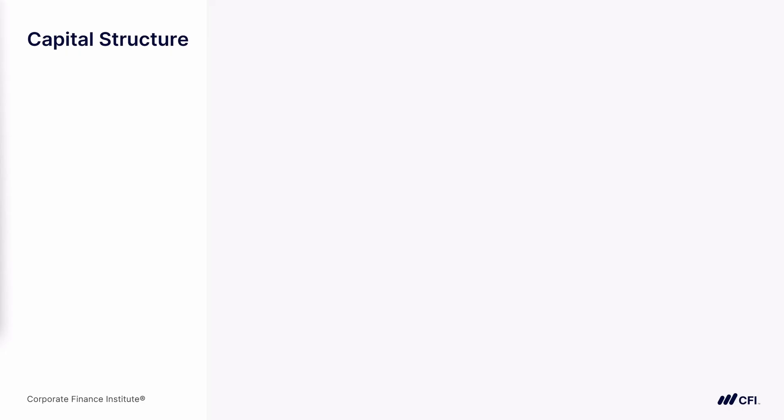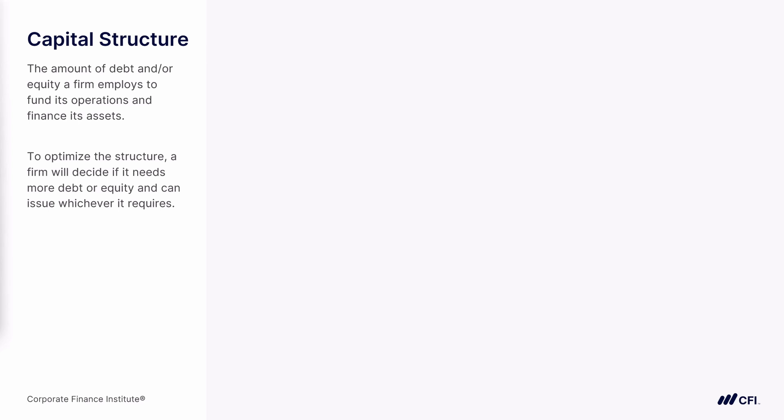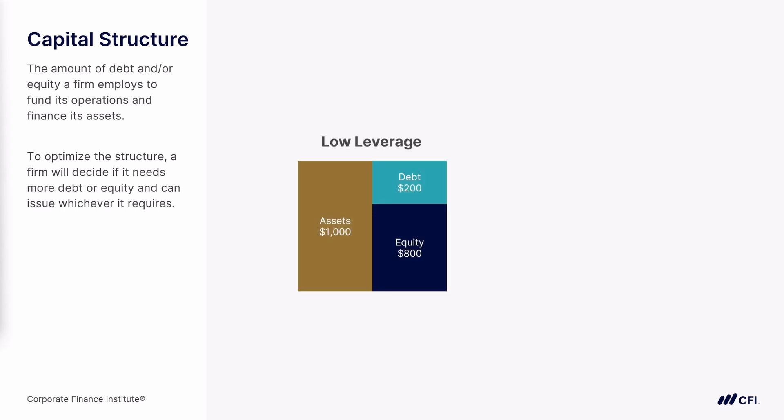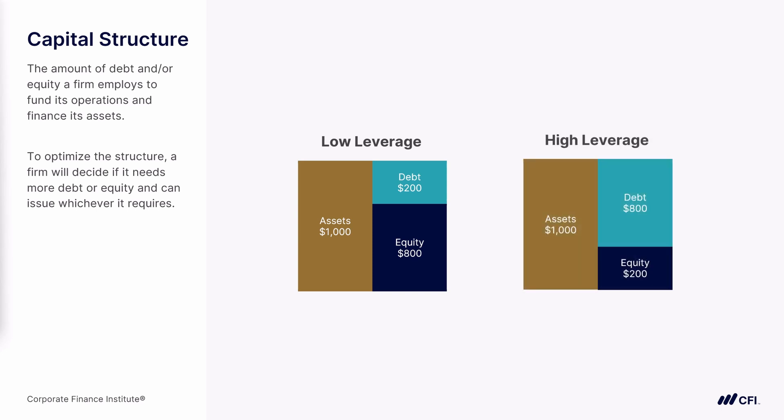Capital structure refers to the amount of debt and equity a firm uses to fund its operations and finance its assets. To optimize the capital structure, the firm decides whether to issue more debt or more equity. Leverage refers to the amount of debt used in the capital structure — for example, low leverage might be 20% debt, while high leverage might be 80% debt.